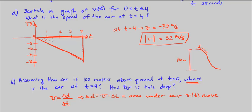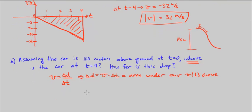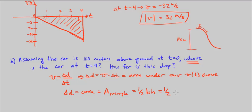If you look at this area, I'll shade it in — it's a right triangle. So delta D equals the area of a triangle, which is one-half base times height. The base is 4 seconds and the height is negative 32 meters per second. One-half times 4 is 2, and 2 times negative 32 is negative 64 meters. The seconds cancel out.